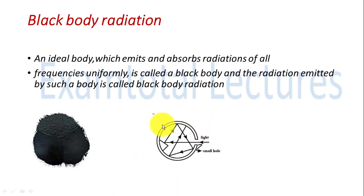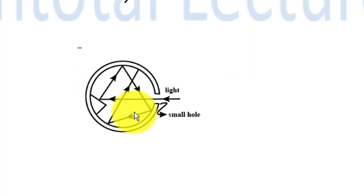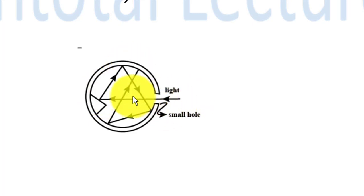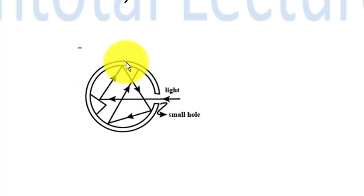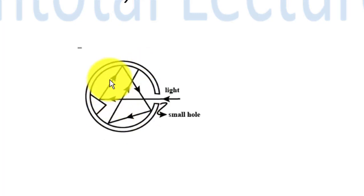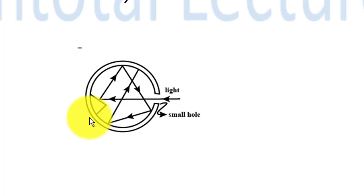Scientists described a black body as a body with a small hole, and there is an inclination inside, so that when incident light enters, it is reflected multiple times inside and ultimately absorbed by the walls. This is because of multiple reflections. Each time, some portion reflects and some portion absorbs, so ultimately everything gets absorbed by the walls of this black body.